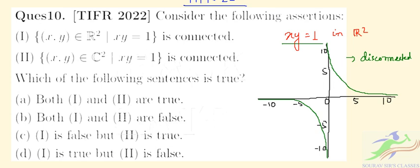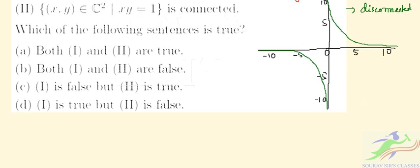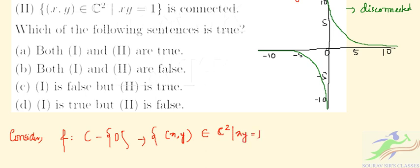So now let us consider that this function f is ℂ\{0}, which is in the... we can write this as x, y belongs to the complex plane, that is ℂ², where x, y equal to 1.